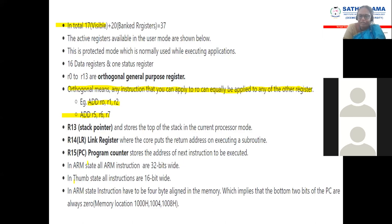In ARM we have three instruction sets. One is the ARM instruction set, another one is the Thumb state instruction set. ARM instruction means all instructions are 32-bit wide. Thumb state instruction means the instructions are 16-bit wide.